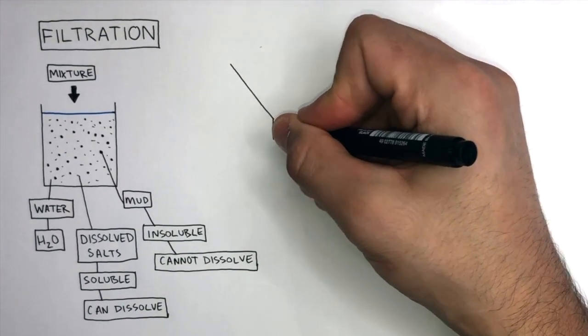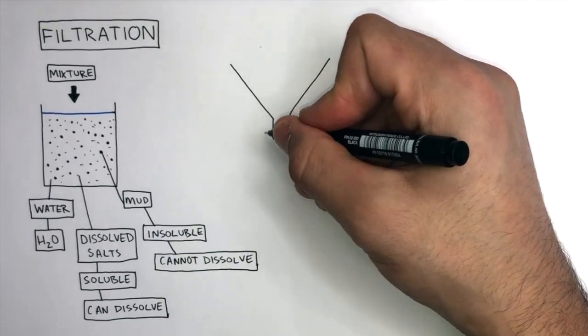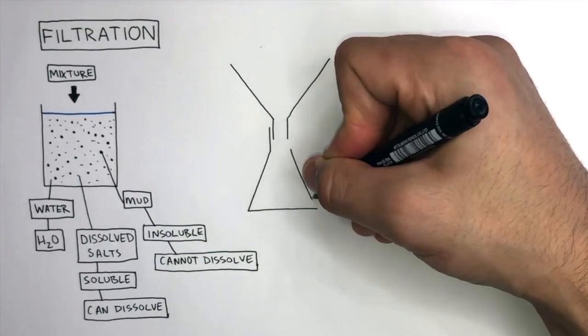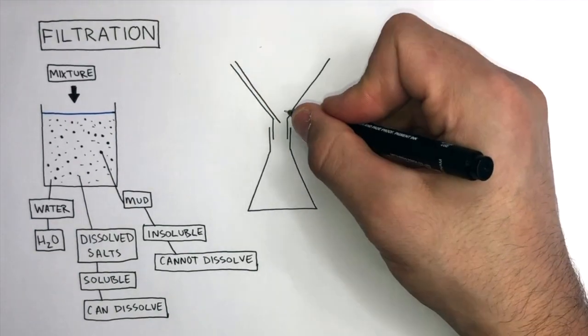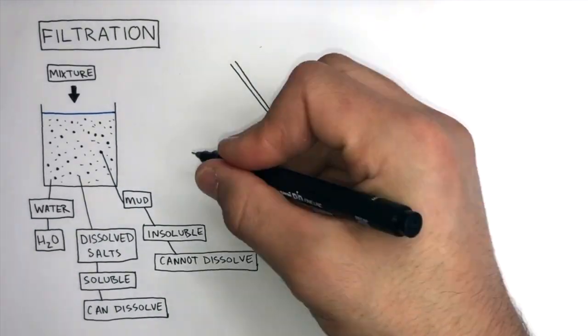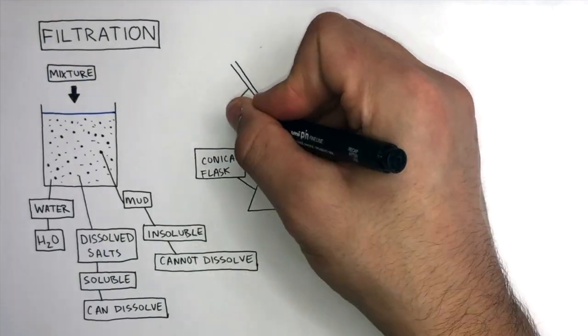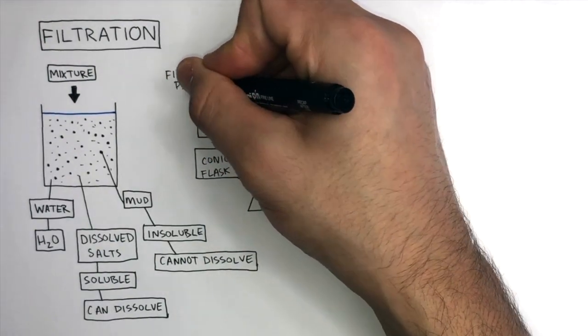The apparatus we need is a filter funnel which slots into a conical flask and then filter paper is folded in a special way to slot into the filter funnel. This is the conical flask, this is the filter funnel, and this is the filter paper.